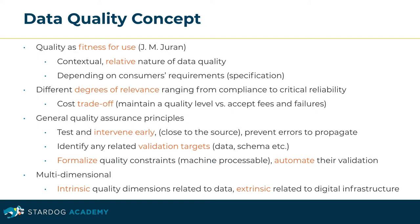Generally, we recommend a continuous quality assessment be an integral part of your data pipeline that will test and intervene early, close to the respective data source, to prevent errors from propagating. The resources targeted by the validation must be identified clearly, along with the options to express quality constraints in a formal, machine-processable manner. This is imperative for a reproducible and automated validation process.